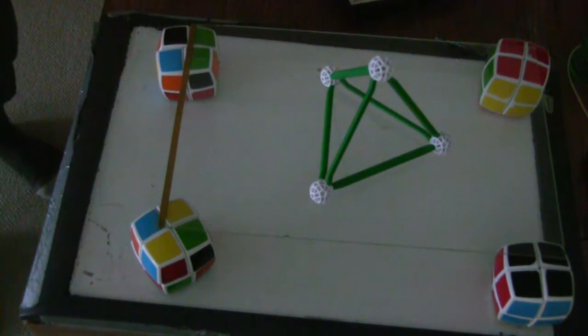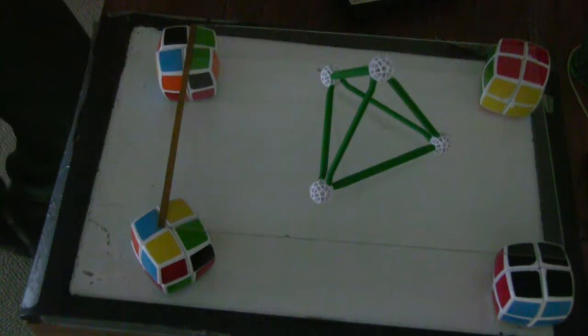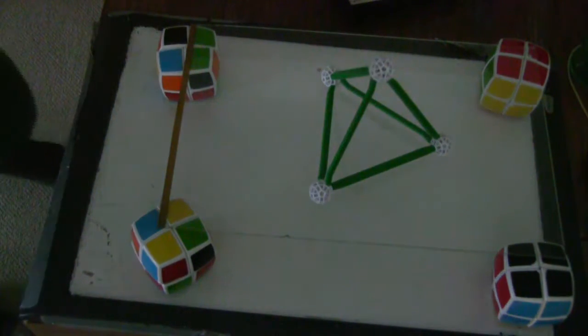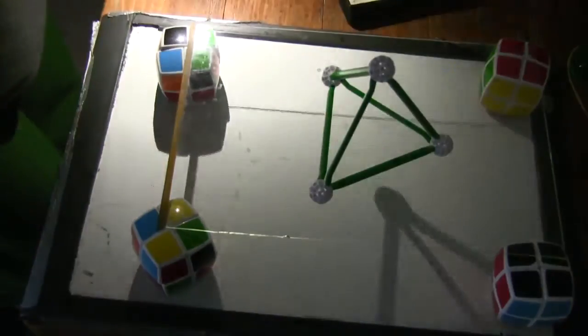Alright, so today our project is going to be one of the things he was talking about, about shadows. We're not going to do shadows of four-dimensional objects, we're going to do shadows of three-dimensional objects. So we have a little piece of glass, and we built a cube and a tetrahedron. Let's look at some shadows of the tetrahedron first.